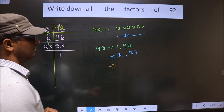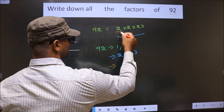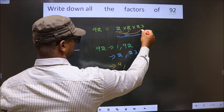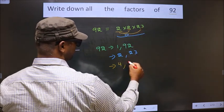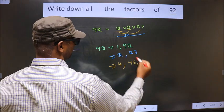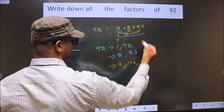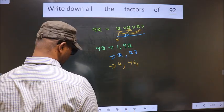First I fix 2, I combine with the 2, so I get 4. Now I combine with 23, 2 into 23 is 46. Now you leave this 2, fix this 2 and combine with 23, we get 46.